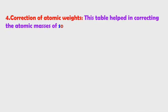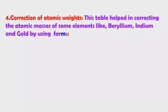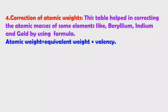This table also helped in correcting the atomic masses of some elements, like beryllium, indium, and gold. He corrected their atomic weights using the formula: atomic weight = equivalent weight × valency.